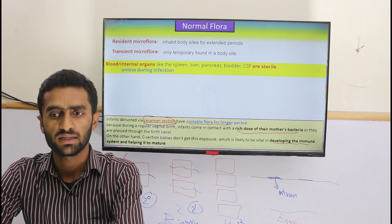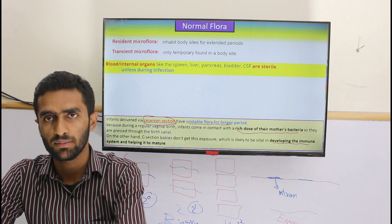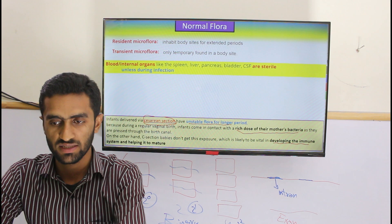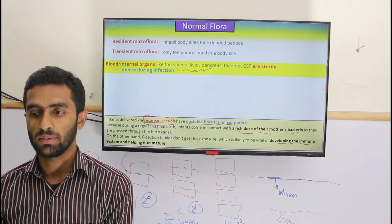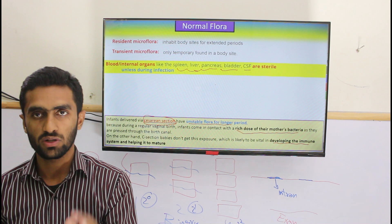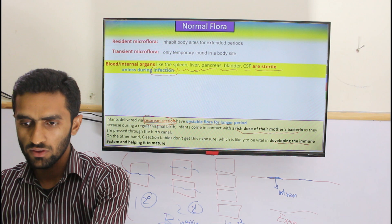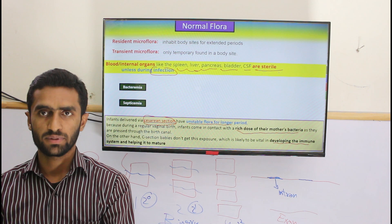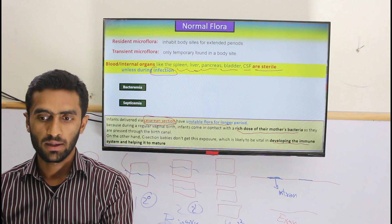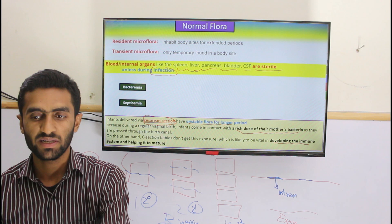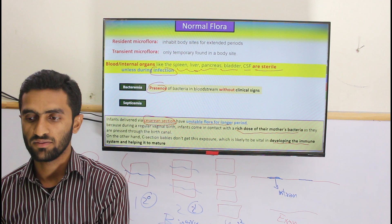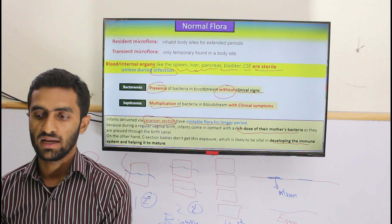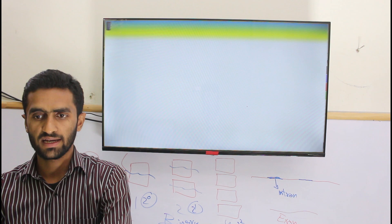Normal flora are always absent from blood. If flora appear in the blood, internal organs like the spleen, liver, pancreas, or CSF, it indicates infection. Two terms students often confuse: bacteremia means bacteria are present in the blood without any signs or symptoms, while septicemia means bacteria are present, multiplying, and causing clinical problems. Bacteremia is simple presence without clinical signs; septicemia involves multiplication and clinical symptoms.